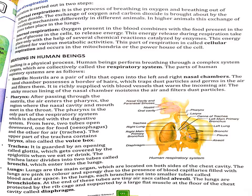Now, breathing in human beings. The system in human beings is called the respiratory system. The parts of the human respiratory system: first of all, nostrils — showing the nostrils on the screen, on the upper side of the neck.